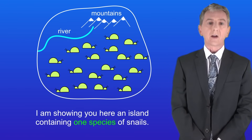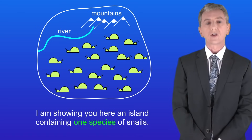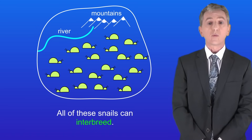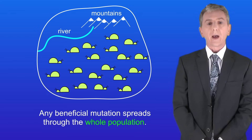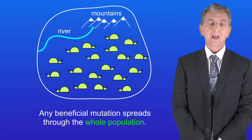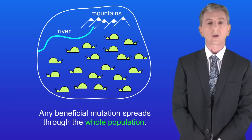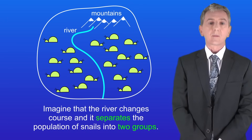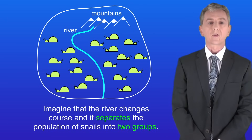I'm showing you here an island containing one species of snails. All of these snails can interbreed, so any beneficial mutation spreads through the whole population. Now imagine that the river changes course, and it separates the population of snails into two groups.